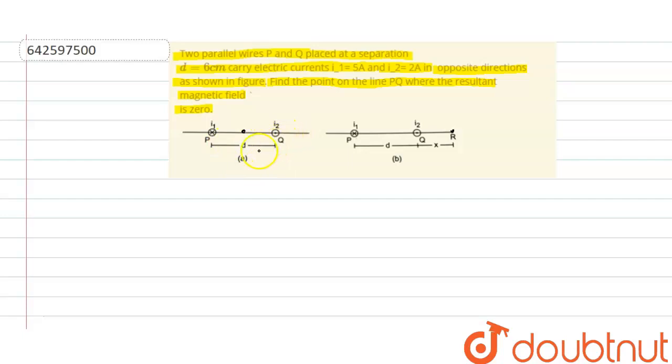So first analyze this figure. For this, if we use the right-hand thumb rule, the magnetic field due to this Q wire will be in this direction for this point, and due to the current wire P, magnetic field will also be in this direction. So this figure cannot be true. So let's call this point R. R has to be outside of this figure. So our figure B will be correct, that R point is situated on the right-hand side of Q.